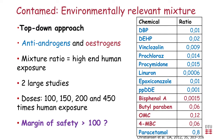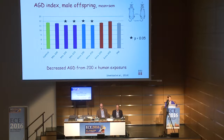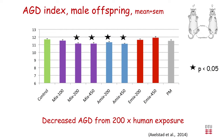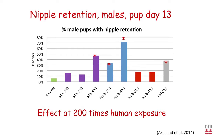For anogenital distance index — corrected for body weight — the total mixture, the anti-androgen sub-mixture, the estrogen sub-mixture, and paracetamol given alone were all assessed. We saw decreased anogenital distance from 200 times human exposure levels. Nipple retention showed a similar picture, also with effects at 200 times human exposure. For sperm count, we saw a clearly significant decrease from 200 times human exposure levels in the anti-androgen mixture, and a trend in the total mixture at 200 and 450 times human exposure.